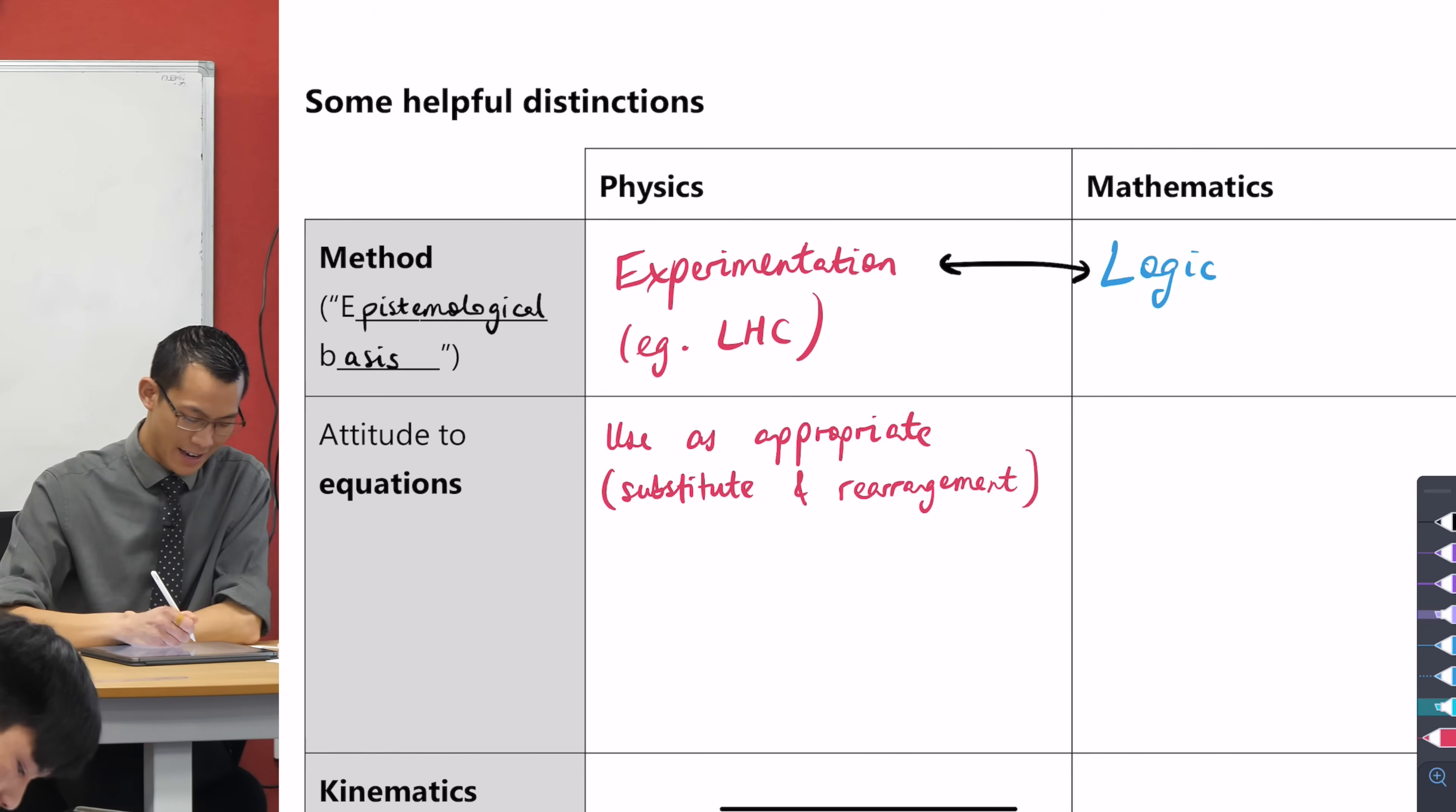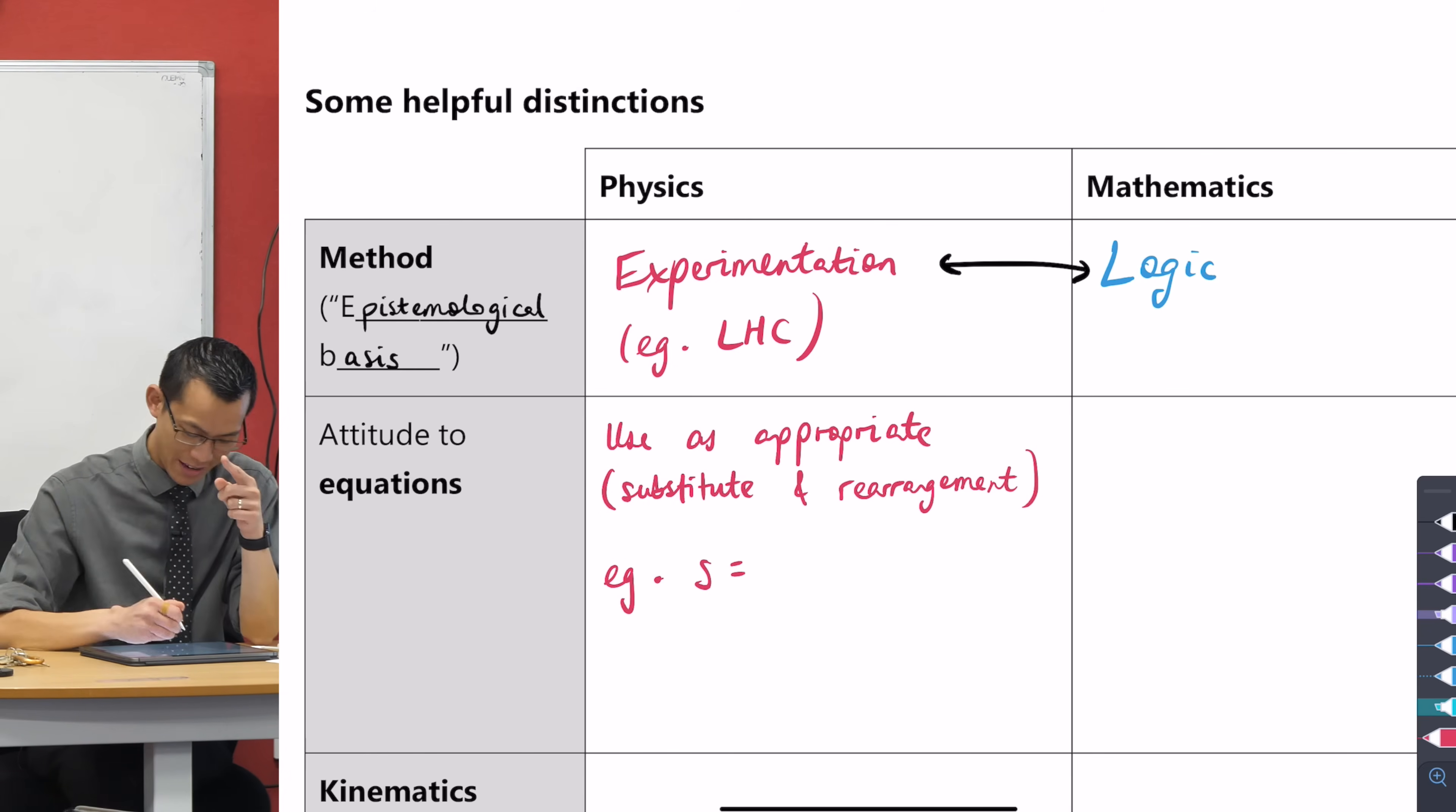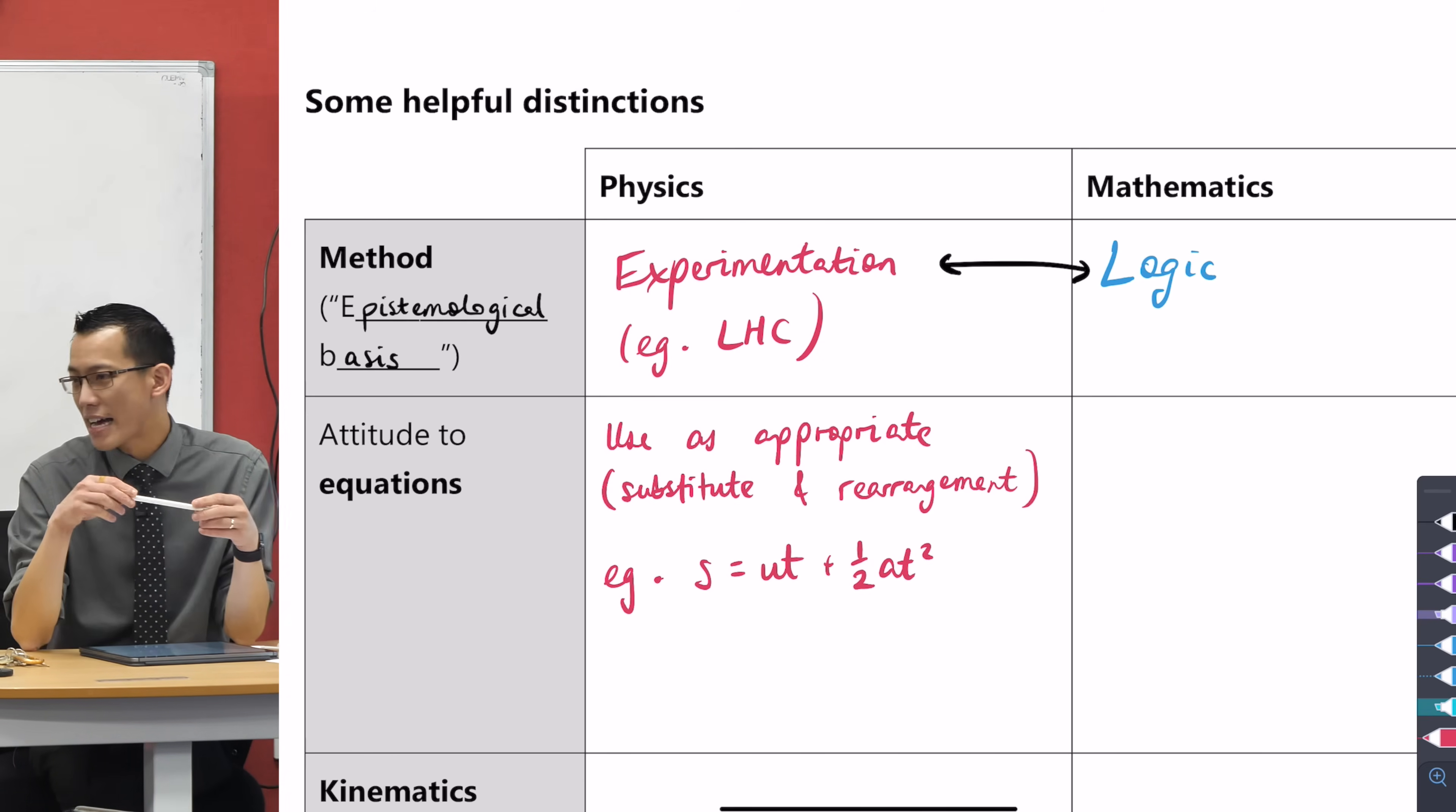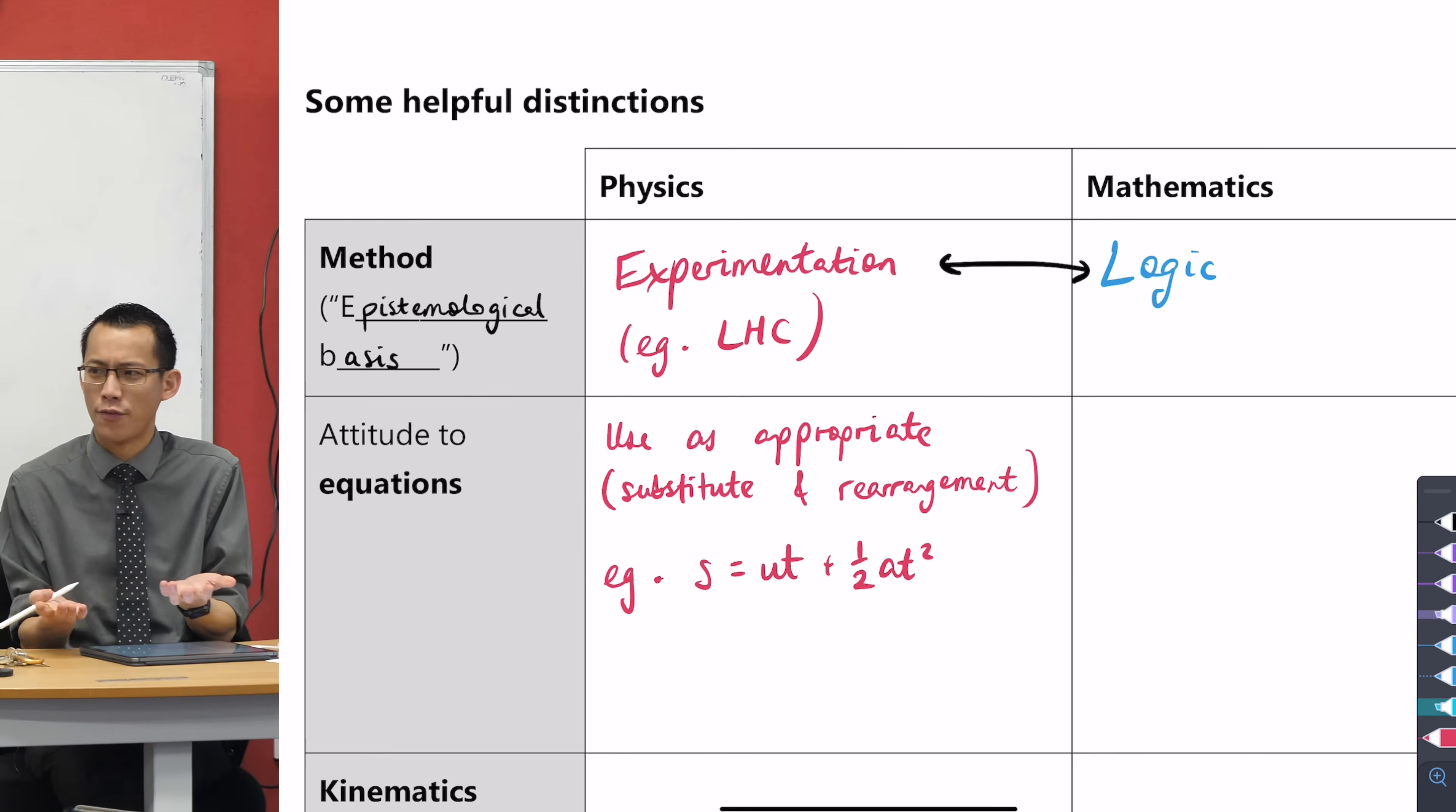So, for instance, what's that one? I think it's an S. S equals, displacement equals, ut plus half at squared. Now, why is that true? Where does it come from? If I'm a physicist, don't care. I can just use it. I don't need to know. I don't need any foundation for it. I can just go ahead, quote it, and use it as appropriate.